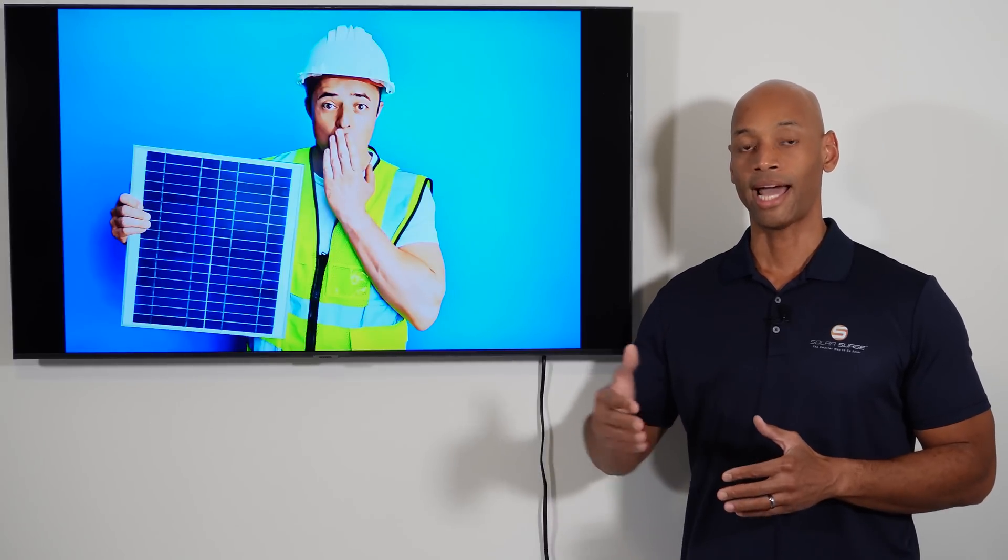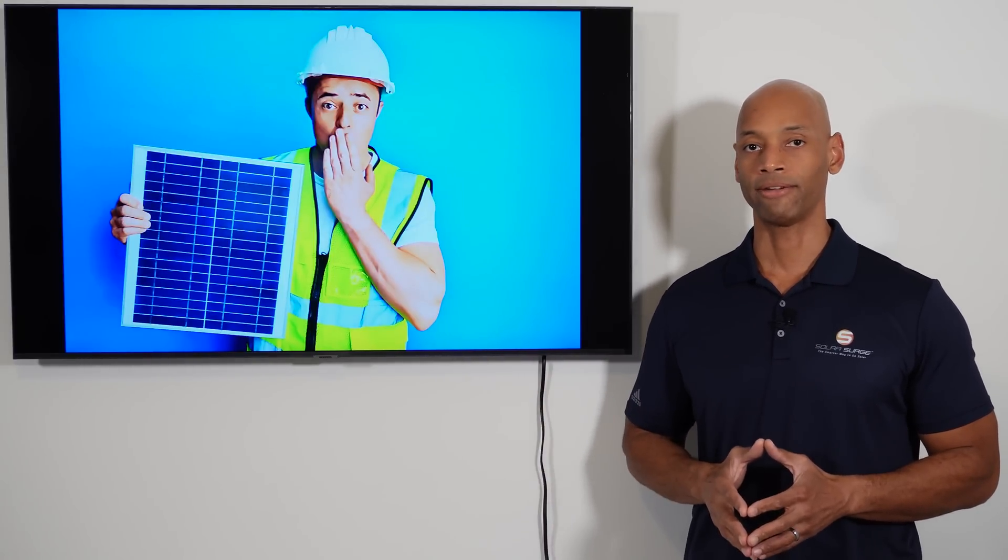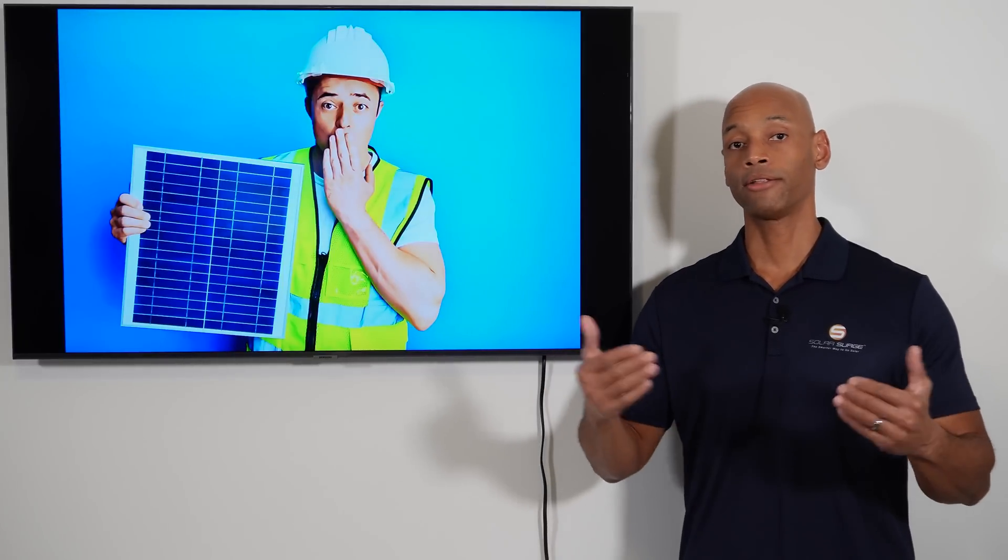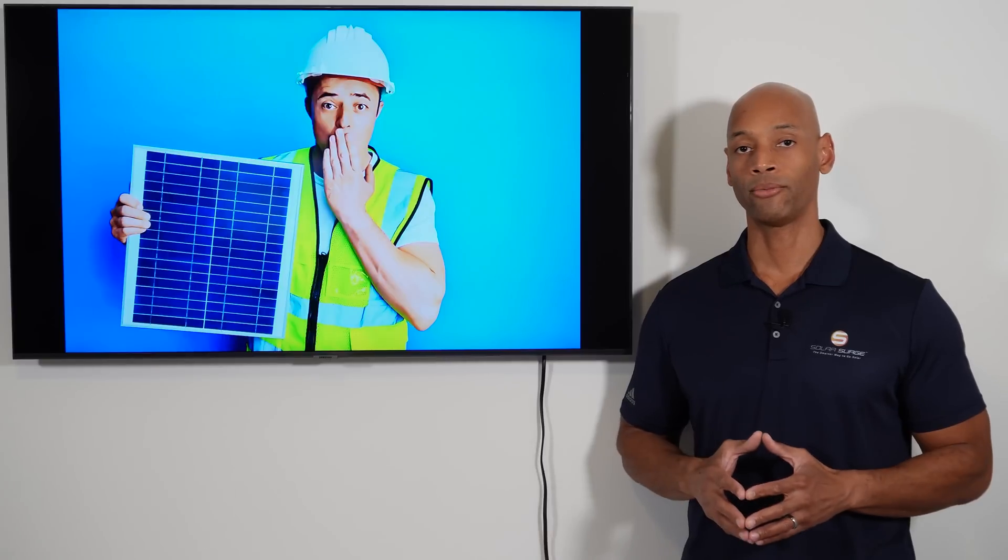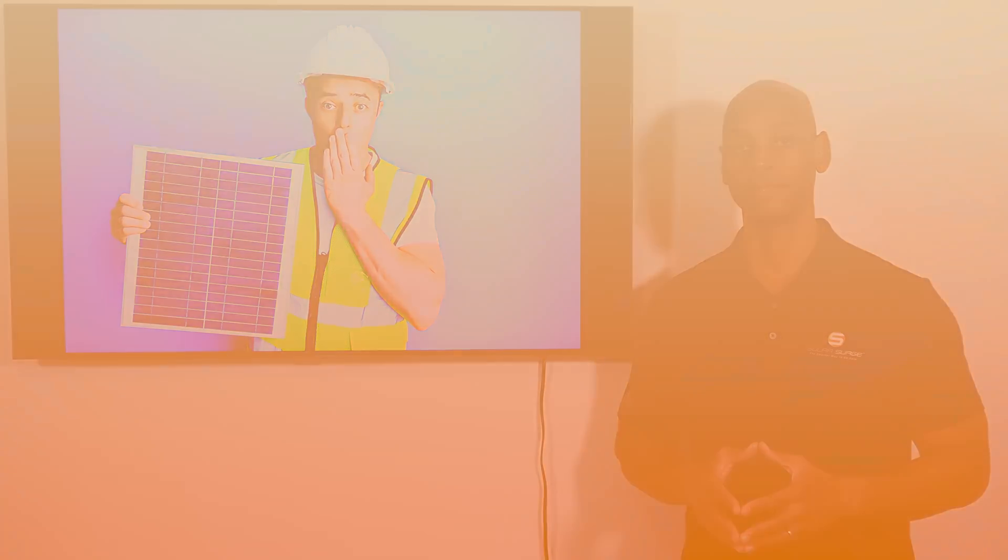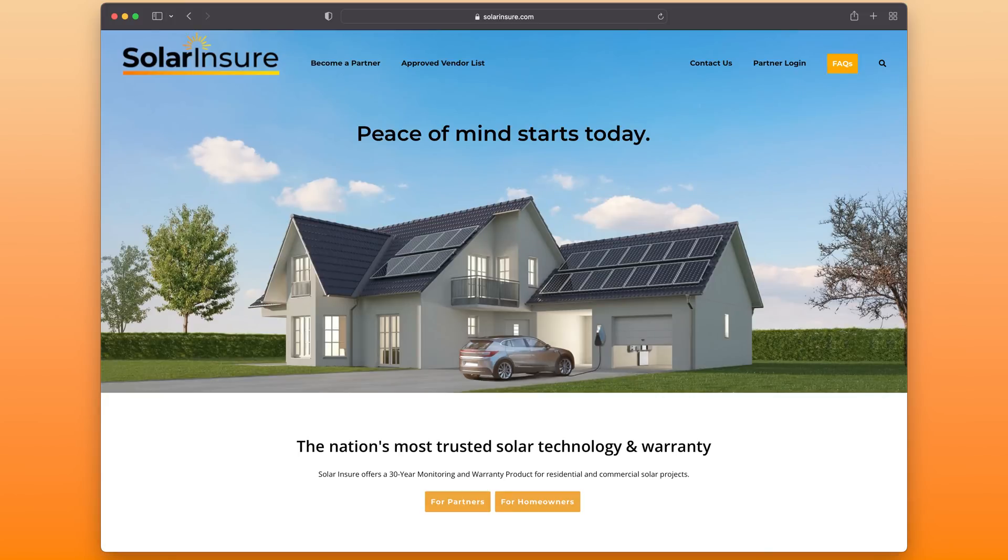One thing you can do is bring in third-party warranty protection for your solar power system. For example, one of our partners, Solar Insure, provides a 30-year third-party warranty guarantee. So in the unlikely event that the installation contractor is no longer in business or for whatever reason is unable to perform under the terms of the warranty, Solar Insure can reach into its network of pre-qualified, pre-vetted contractors and bring in somebody else to make repairs if needed. It gives you a little bit of extra layer of protection.